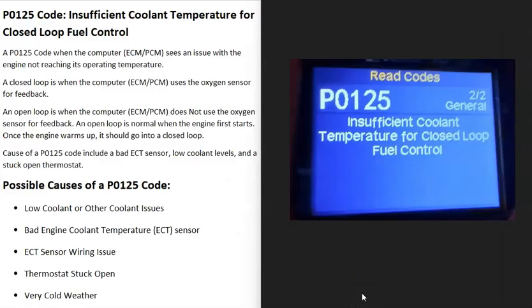Today I'm talking about a P0125 code — what it is and how you go about fixing it. A P0125 code is an insufficient coolant temperature for closed loop fuel control.